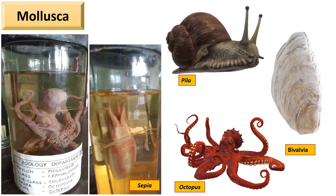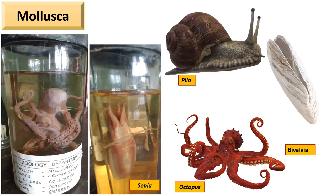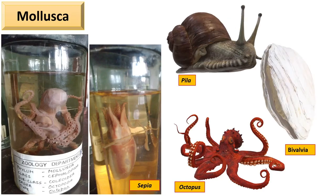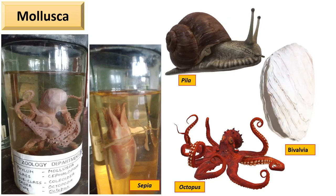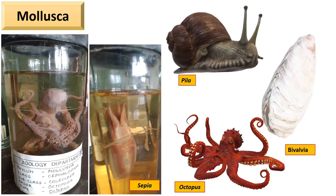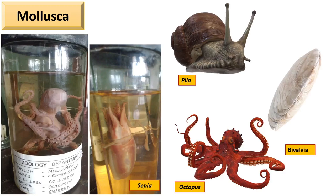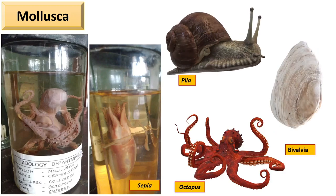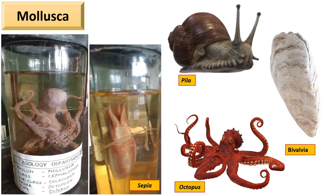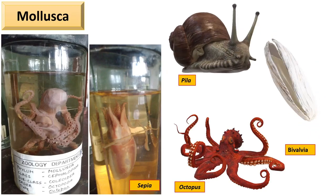Statocysts and osphradia are present. The mantle is present, which is thin and covers the dorsal body wall. Some bivalve forms produce pearl, an important ornament. Octopus ejects an inky fluid in water to escape from an enemy.